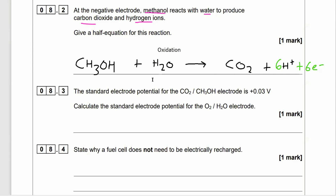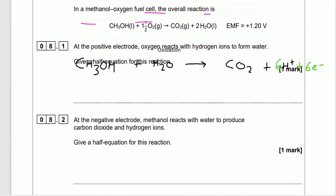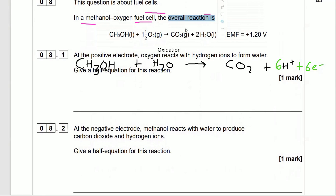That's important for the next step. Question 8.3: the standard electrode potential for the CO₂/methanol electrode is +0.03 volts. Calculate the standard electrode potential for the oxygen/H₂O electrode. We know the EMF of the overall reaction from earlier — it was +1.20 volts. The formula is: EMF = E°(reduction) − E°(oxidation).